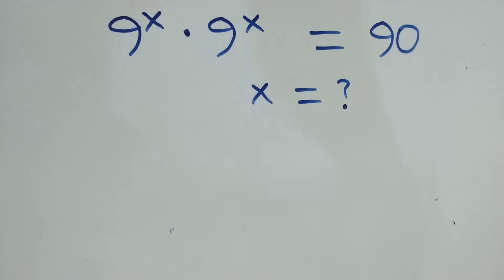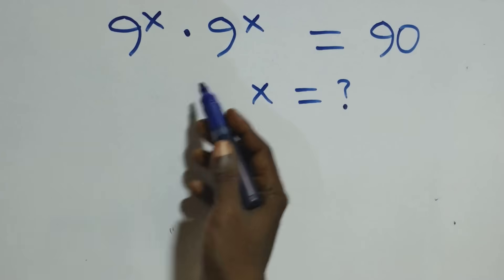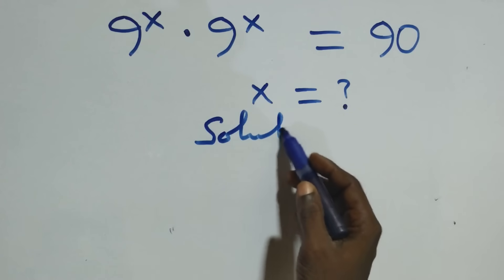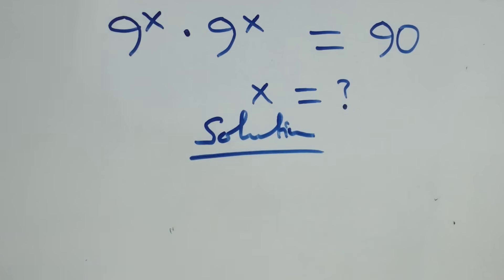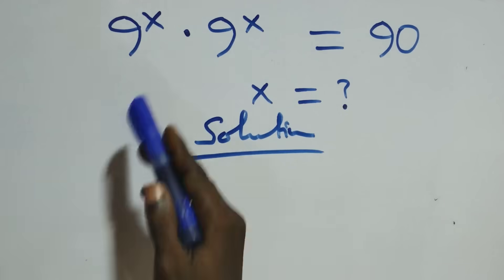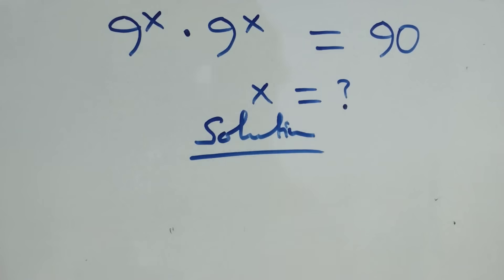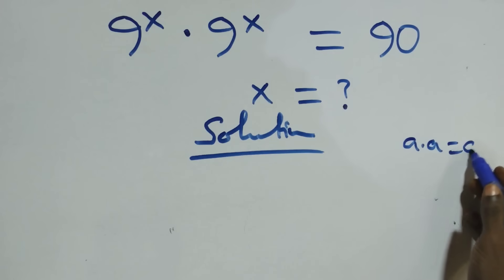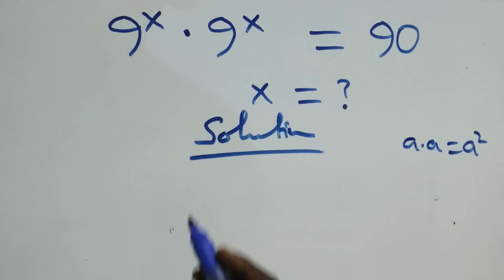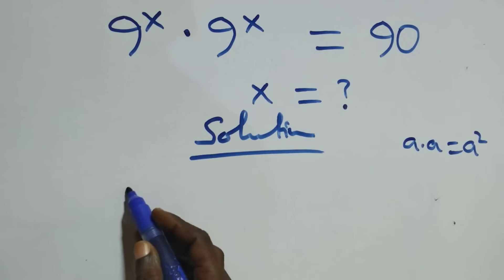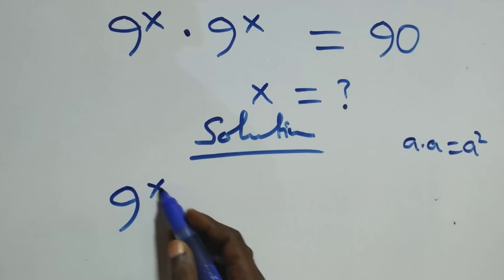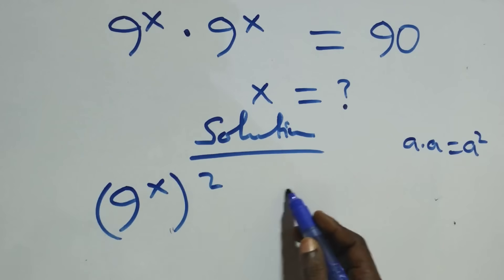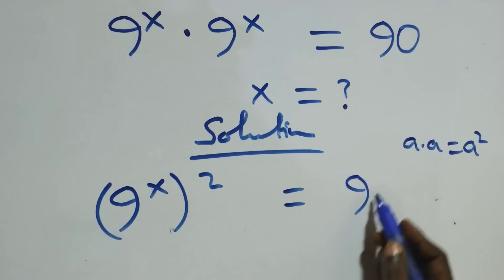Hello, you are welcome. Here we solve this nice exponential equation. We have A times A, which is the same as A squared — the same thing multiplying. So here we can write it as 9 raised to power x squared, which equals 90.